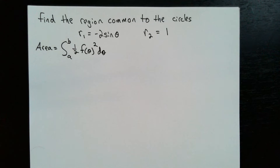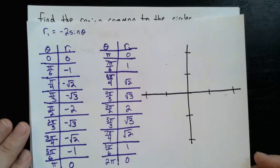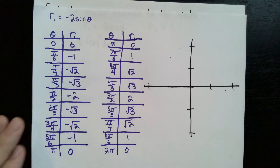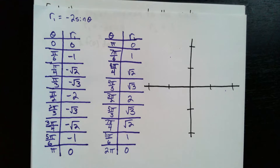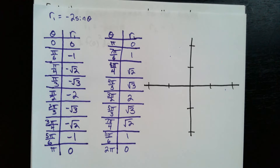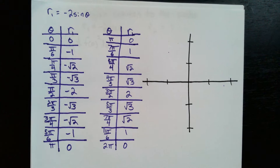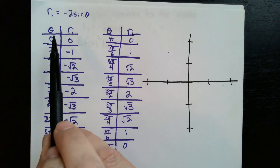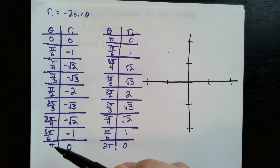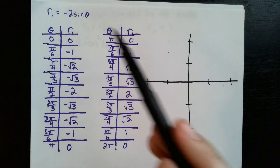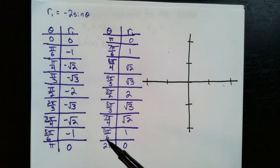The first thing we need to do is figure out what these graphs look like. I have written out a table that shows for r1 all the values between 0 and pi over 2. Notice that from 0 to pi is the same graph as it is from pi to 2 pi.